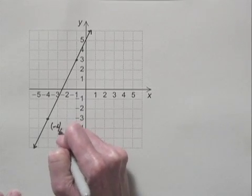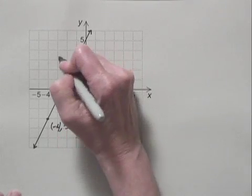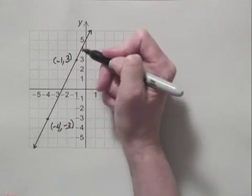And let's label them. This is (-4, -3), and this is (-1, 3).